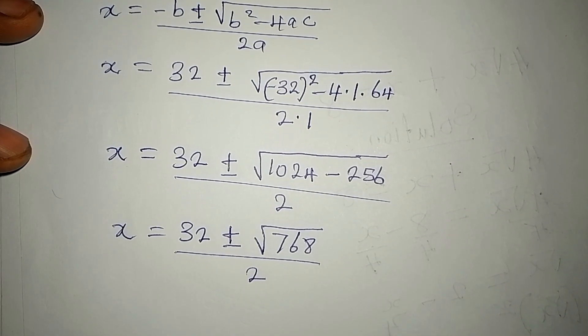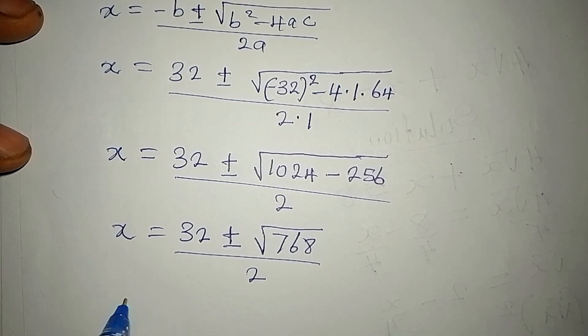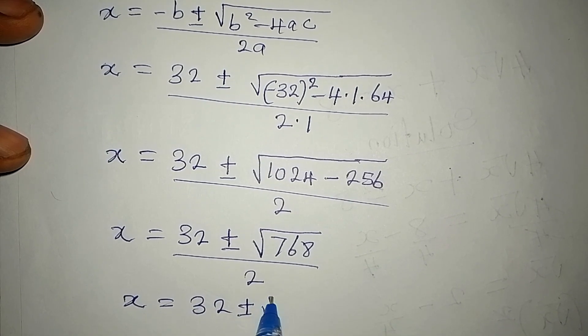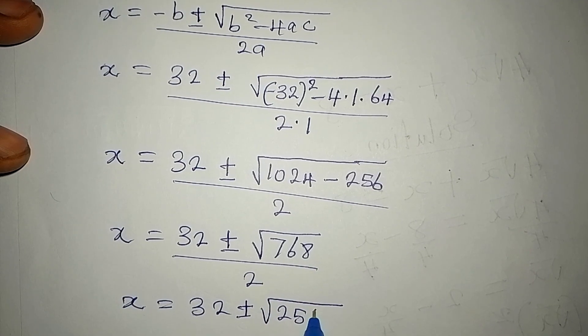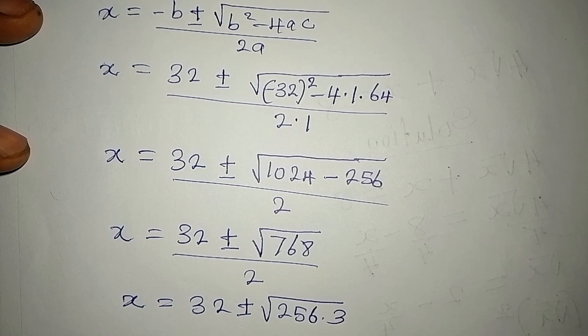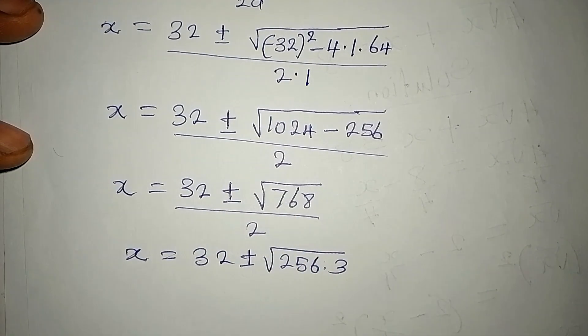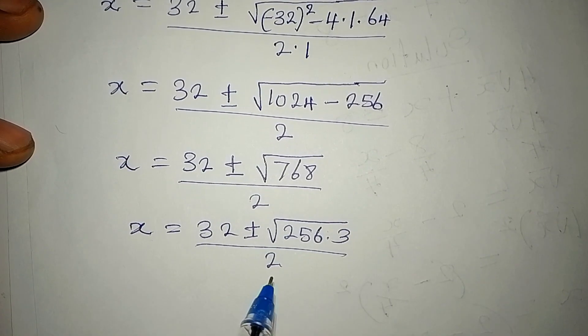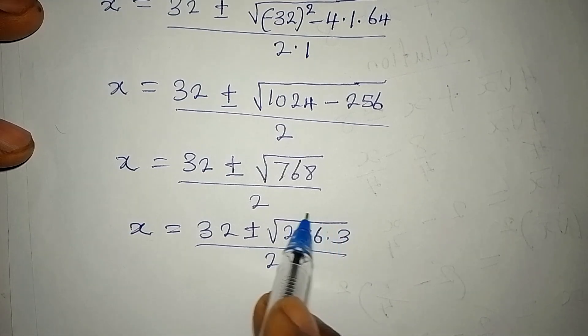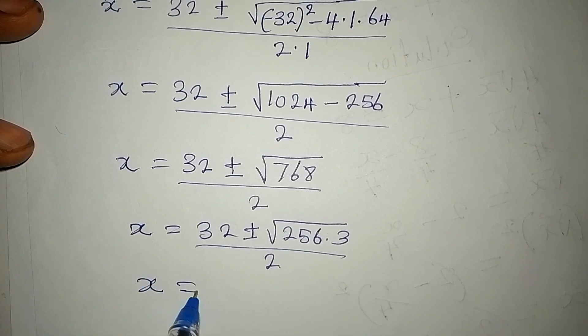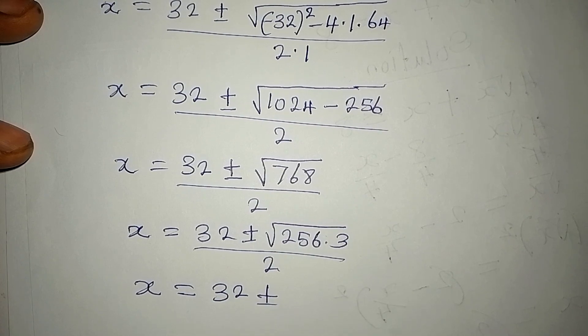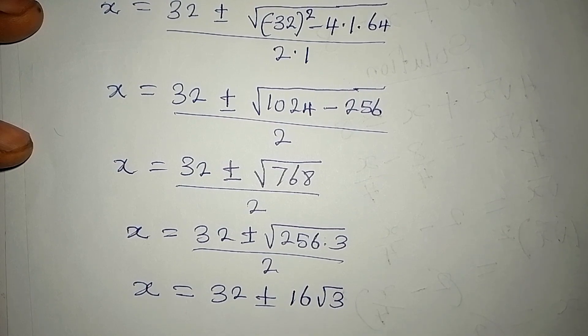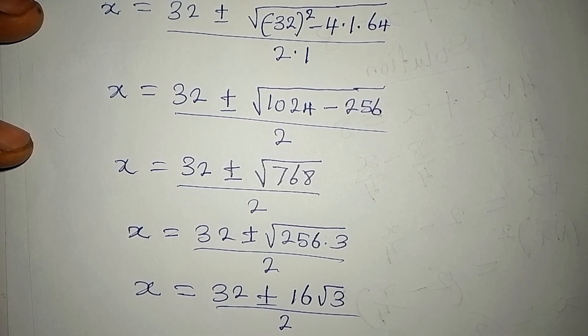And we can simplify this 768. So that x is equal to 32 ± ... 768 is 256 multiplied by 3. And remember that this is a perfect square. So we divide by 2. Do not divide 32 by 2 yet until you simplify this. So x is equal to 32 ± √256 is 16, then we have √3. This is over 2.